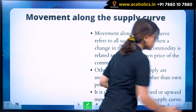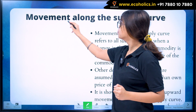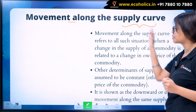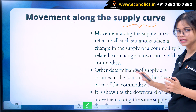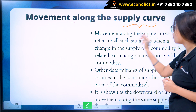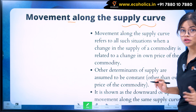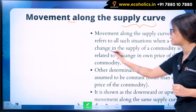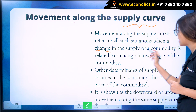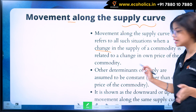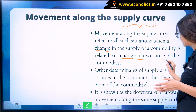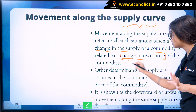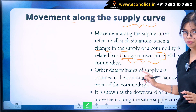Let's first start with the movement along the supply curve. What does movement in the supply curve mean? Movement along the supply curve refers to all such situations when change in the supply of a commodity is related to change in the own price of the commodity. Remember — change in the own price of the commodity.